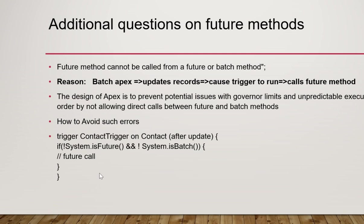If the call is coming from a batch or a future context, you will not call the future method in the trigger. Otherwise, if it is a regular context, you will allow the future call. So the condition checks: if the update trigger was not triggered due to a future call or a batch, then you can call other future methods.